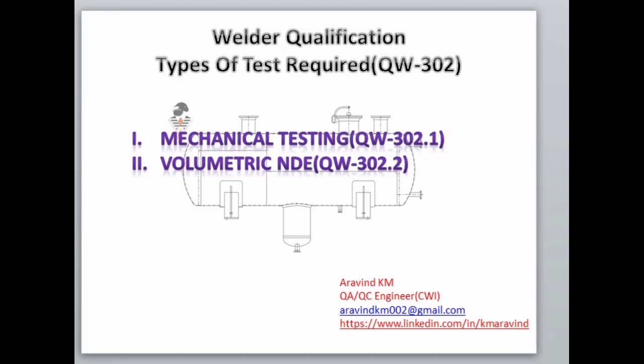Hello friends, welcome to my channel. Today's topic is a continuation of how to review welder qualification as per ASME Section 9. In this lesson, we are going through mechanical testing for performance qualification, which is given in QW302.1 of ASME Section 9.